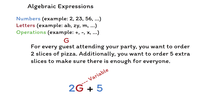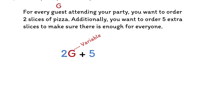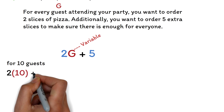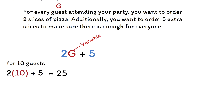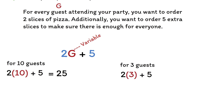It can change — we don't know the number of guests. If you invite 10 guests, the total number of pizza slices you need is 2 times 10 guests plus 5 extra slices. This is 25, so you will need 25 slices of pizza for 10 guests. If you invite 3 guests, the total number of pizza slices you need is 2 times 3 guests plus 5. This is 11, so you'll need 11 slices of pizza for 3 guests. The expression 2g plus 5 helps you quickly calculate the total number of pizza slices needed for any number of guests.